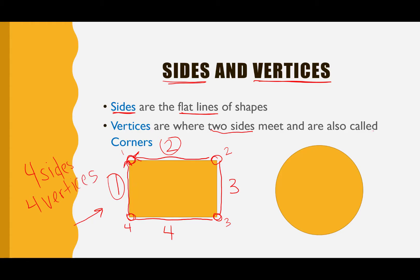Sometimes our shapes, like this one right here, have no sides and no vertices. Do you see any flat sides on this shape? It kind of curves around like this, so I can't really draw a flat line next to it. Some of our shapes are not going to have sides or vertices, and there's a special name for this shape that we're going to go over later. This shape has no sides and no vertices.